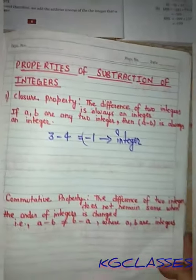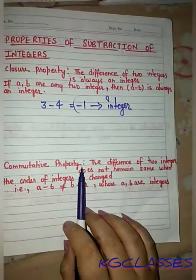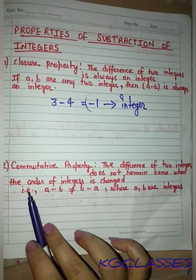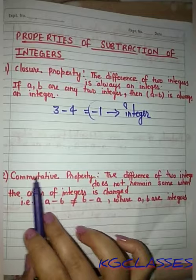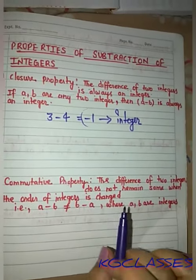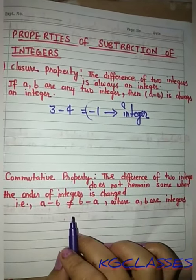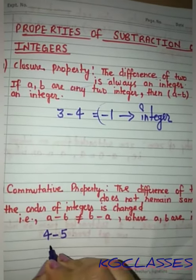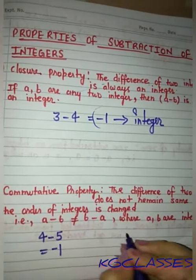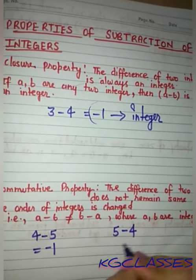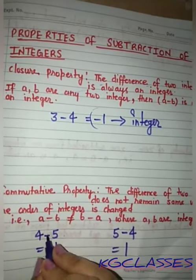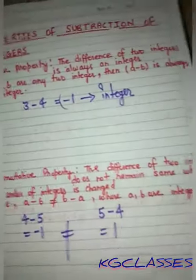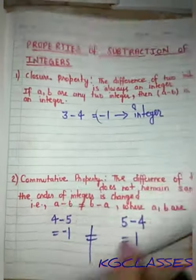The next property is the commutative property. The difference of two integers does not remain the same when the order is changed. For example, if we do 4 minus 5, we get minus 1. But if we do 5 minus 4, we get 1. These are not equal, so the commutative property is not satisfied in subtraction.